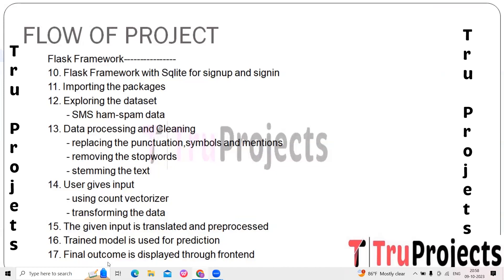The final outcome is displayed through the front end of the web application. The prediction result is communicated to the user, indicating whether the input text is classified as ham or spam. The front end plays a crucial role in providing a seamless and intuitive experience for users interacting with the SMS ham/spam classification service.